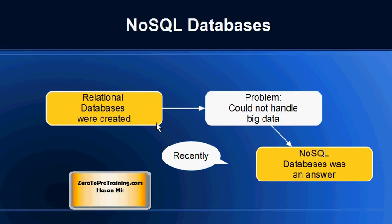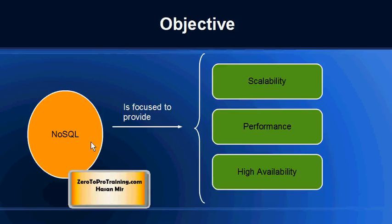Then life moved on, and suddenly we had a big data scenario, which is a recent scenario. Relational databases are unable to cope with the huge amount of data. So the answer was NoSQL databases. They were created because of the limitations of relational databases when it comes to big data. The main focus of NoSQL databases is to provide scalability, performance, and high availability.